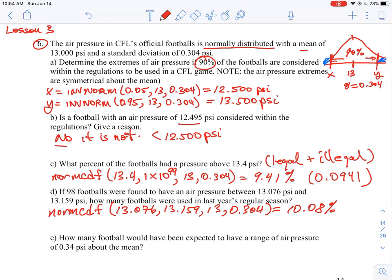And that will tell us that we have 10.08% of the balls lie within those ranges. So we just have to do a simple ratio to figure this out. So if 98 footballs were found to have this value, this means that we could set up a ratio like this. Essentially, we're going to do a proportion here. We want to know how many footballs were used in last year's regular season. So if we set X as the number of footballs that we used in last year's season, and we know that 98 of those balls is equal to a certain percentage, we can just do a direct proportion. So X represents 100% of the footballs, and 98 represents 10.08% of the footballs.